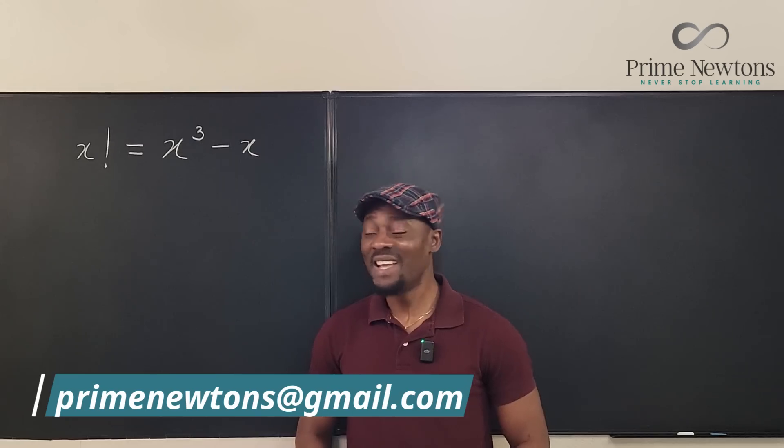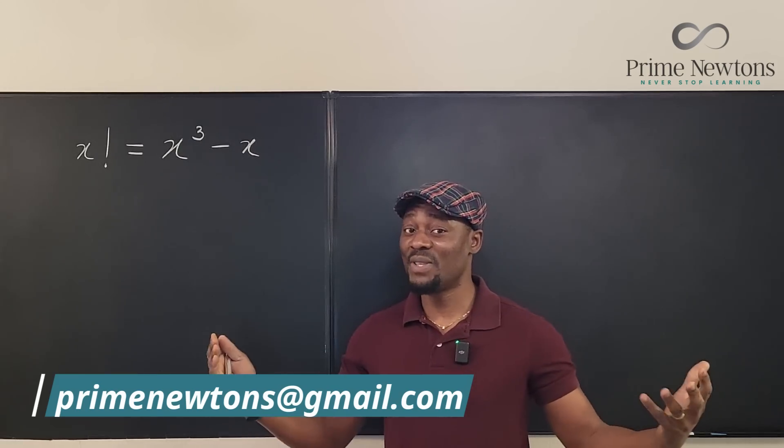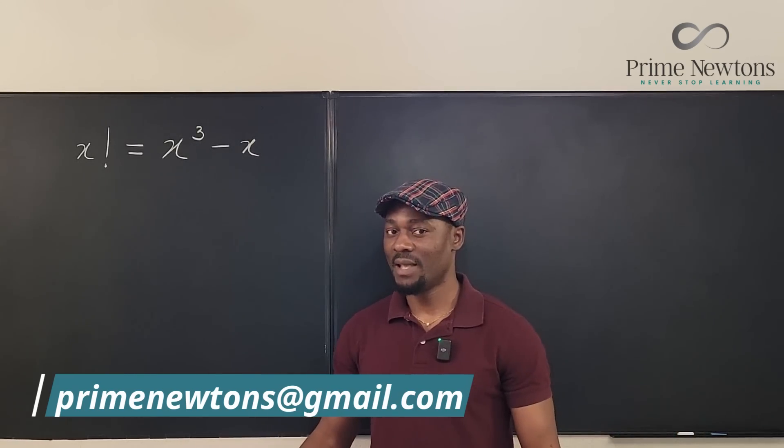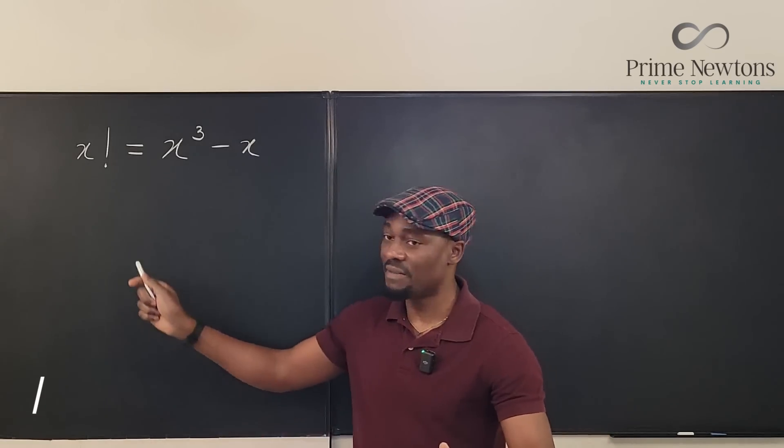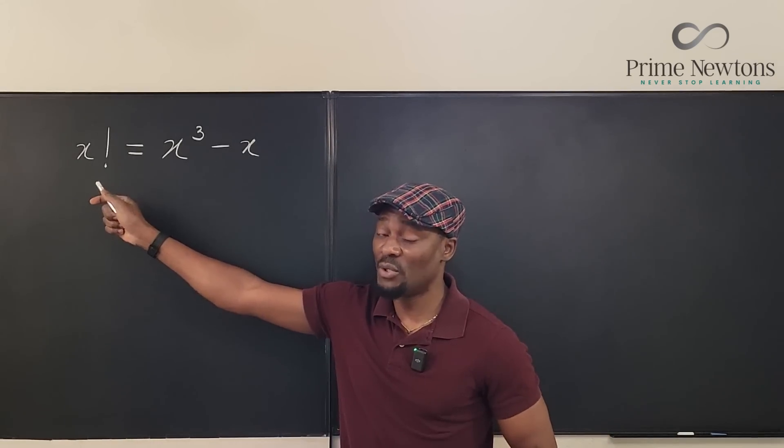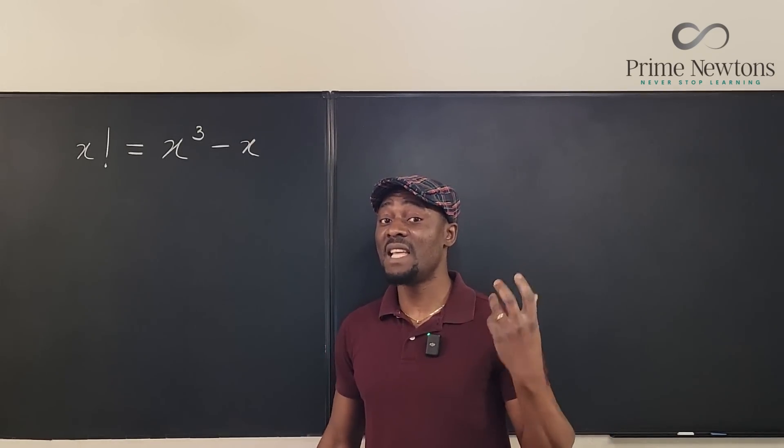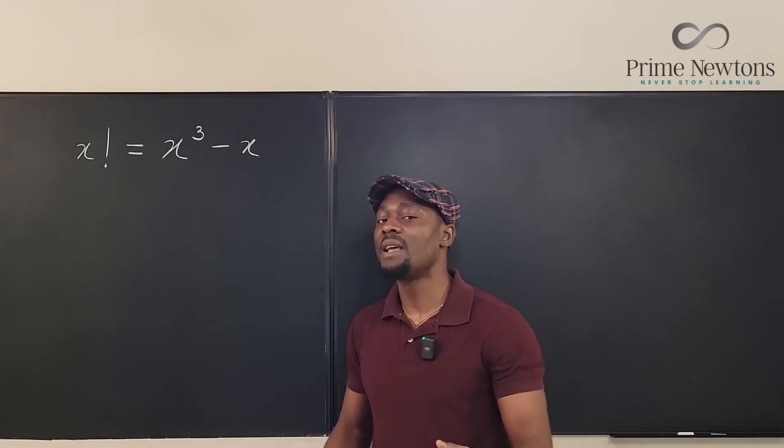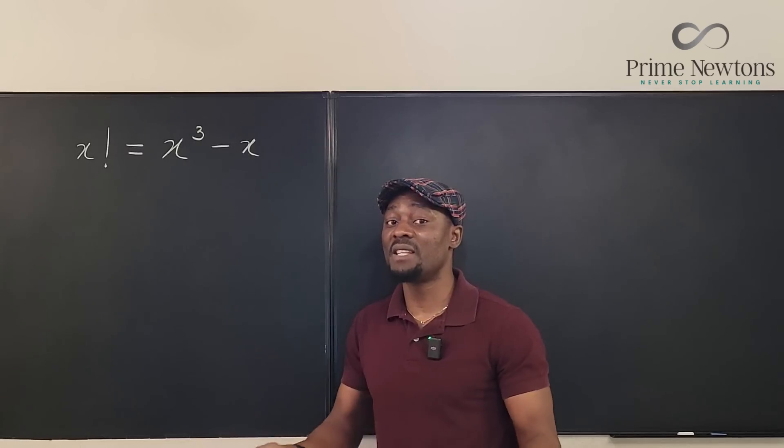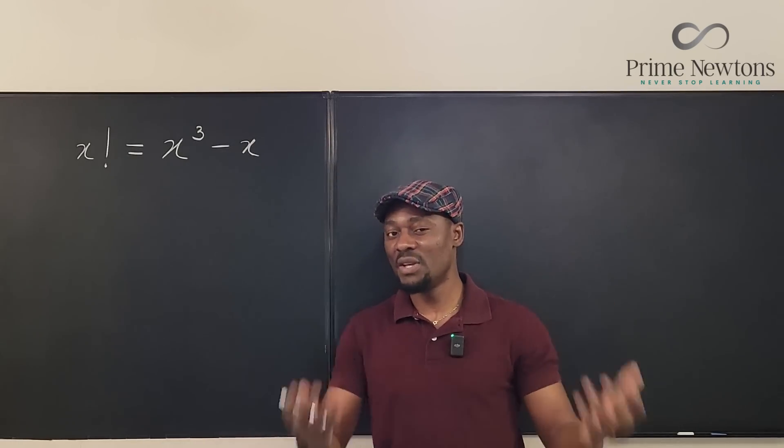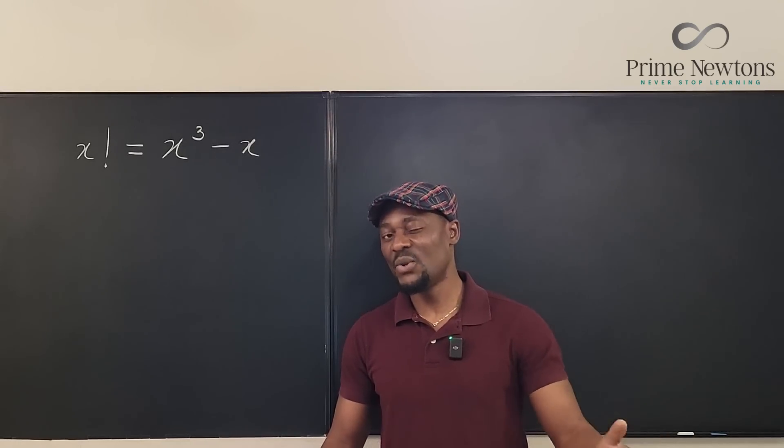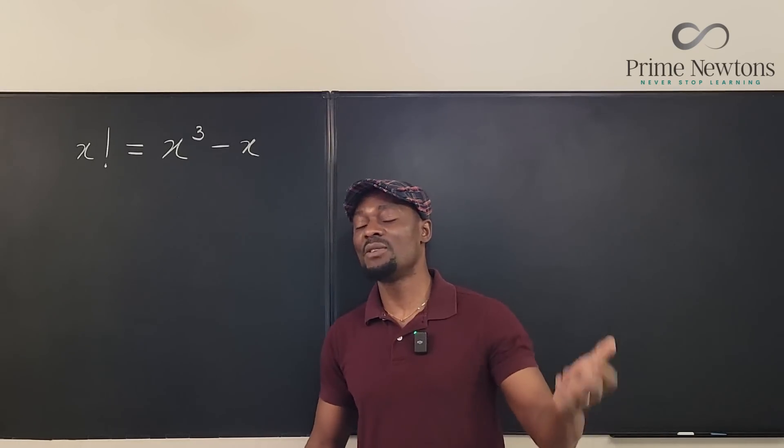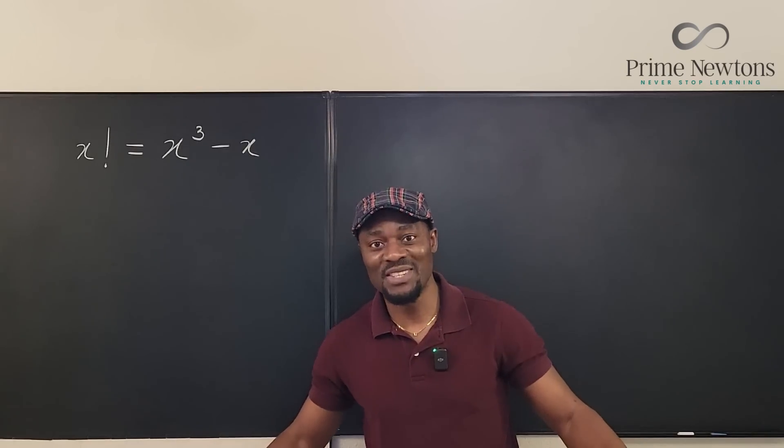Welcome to another video. Let's solve this equation here with an unknown x. And because it involves a factorial, we'll have to assume that x is an integer. In fact, it's a natural number because the factorial function is defined only for natural numbers, including zero. We're not talking about the gamma function at this point.